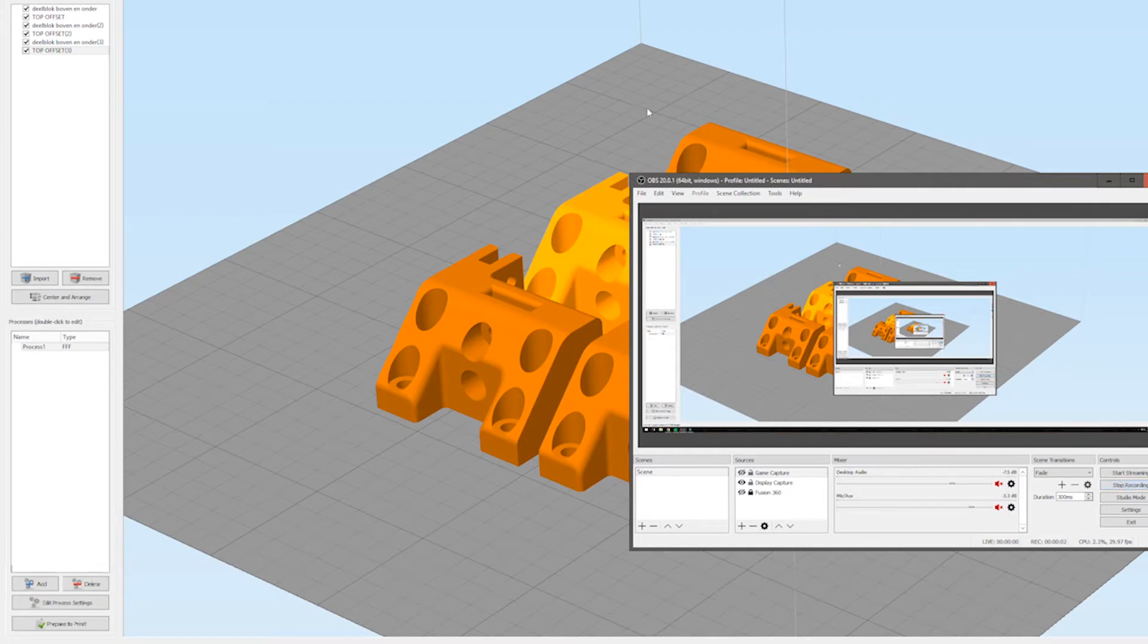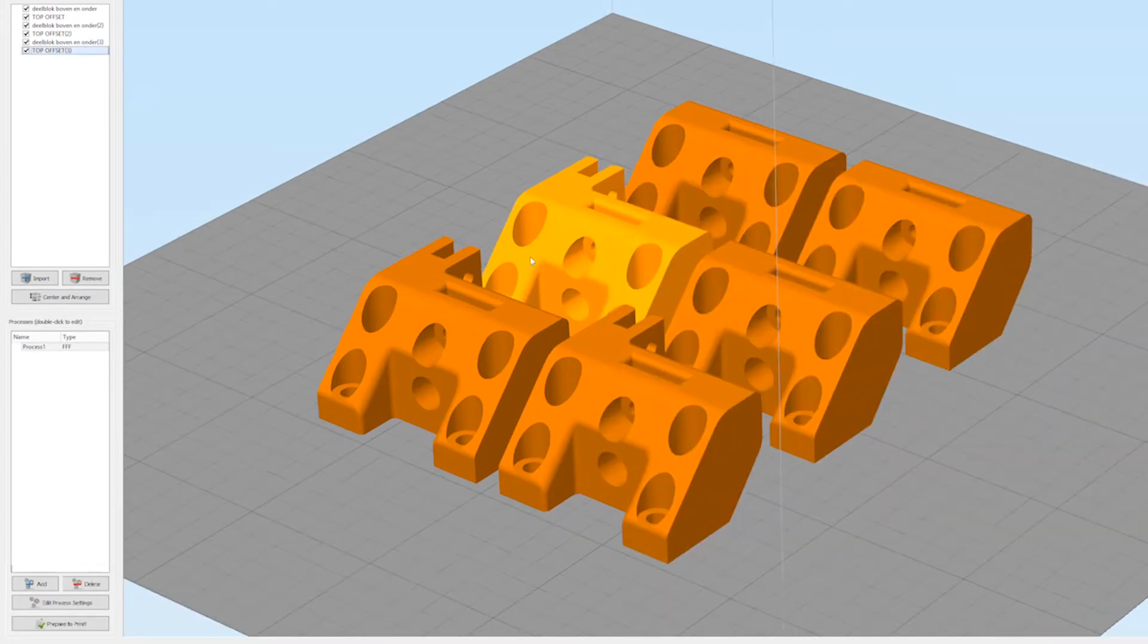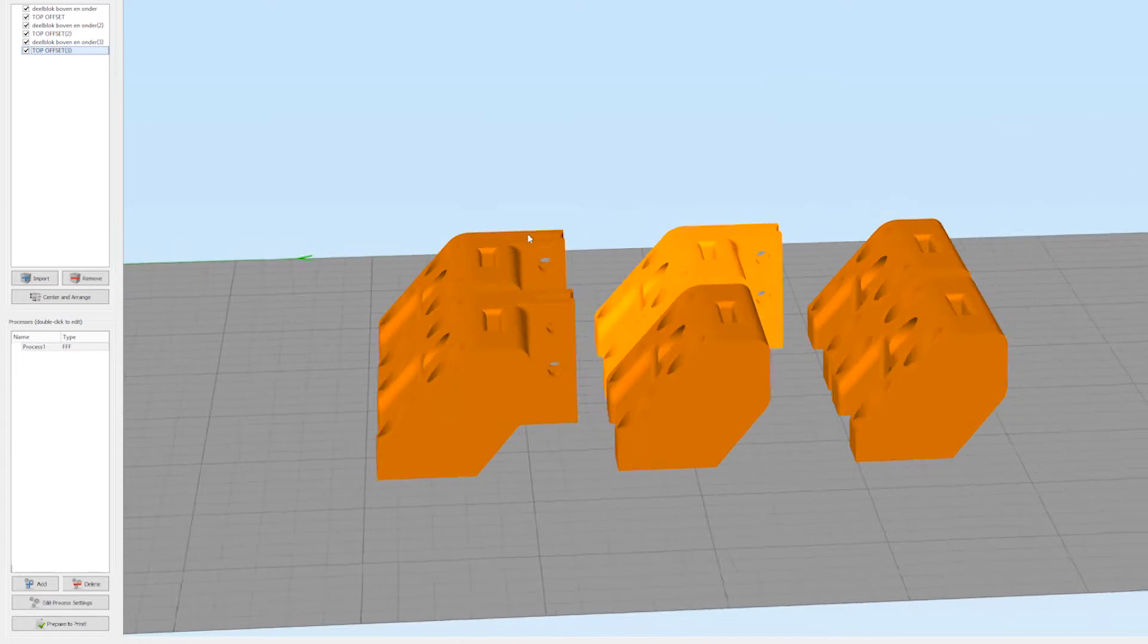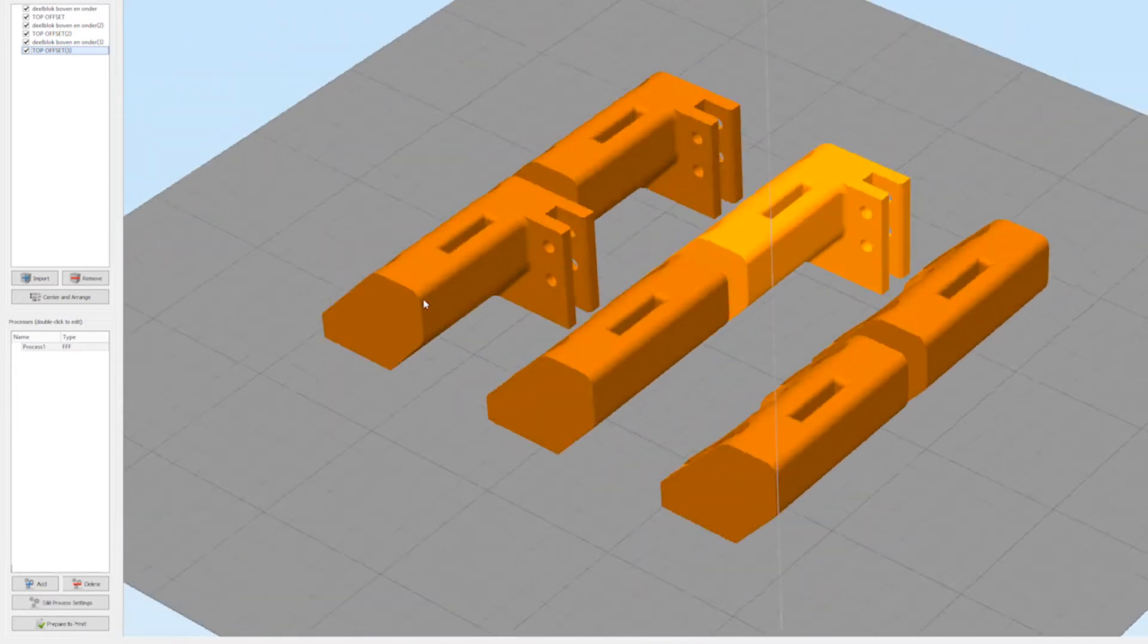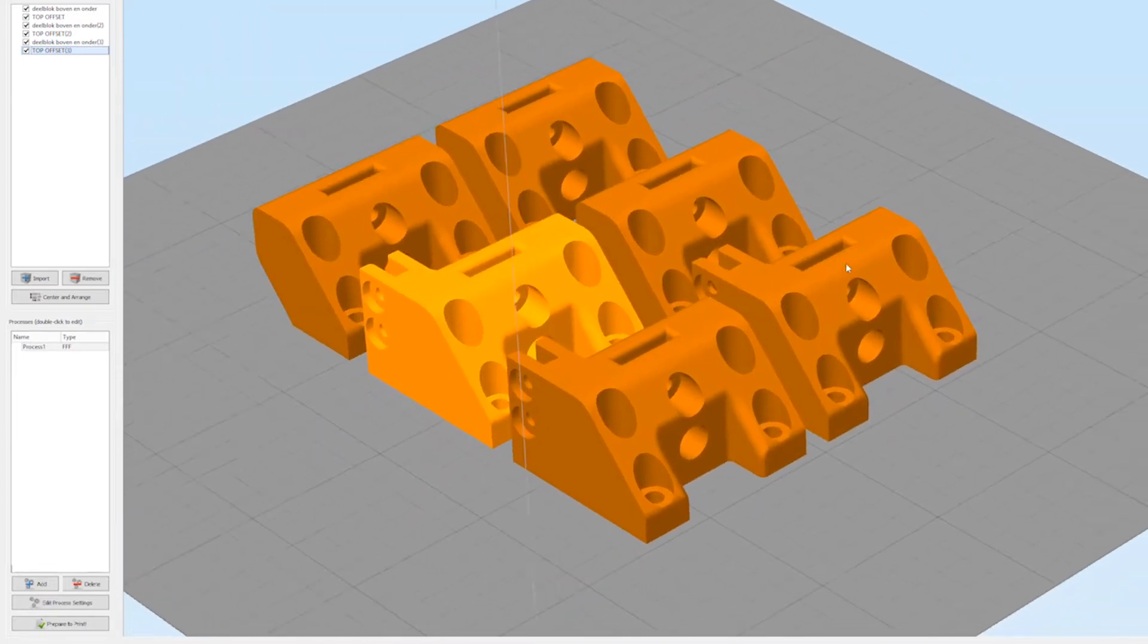There is a lot to print but first I'm going to show you what settings I used in Simplify3D. Simplify3D is the program that I used to convert the STL files to G-code for my 3D printers.